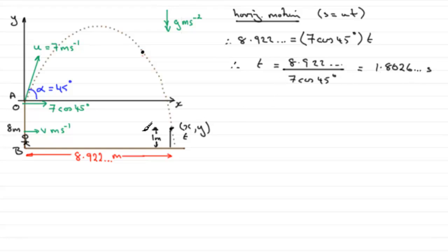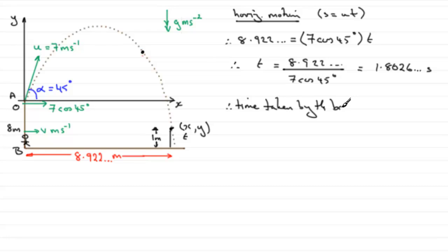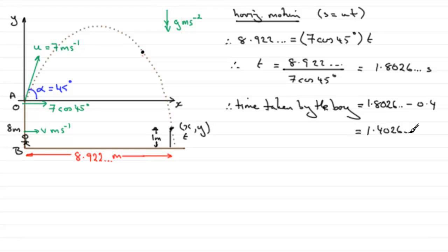So how long is it going to take the boy to run this distance of 8.922 metres? Well, 0.4 seconds less. Therefore, the time taken by the boy equals 1.8026 minus 0.4, which gives us 1.4026 seconds.